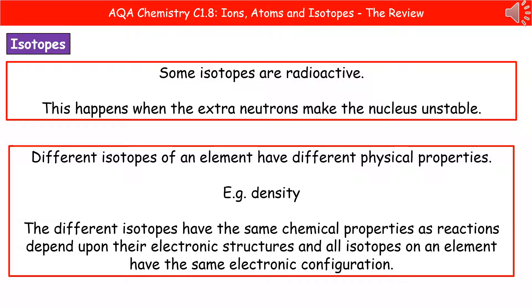When we're considering those different isotopes, then they also have different physical properties, like their density. But they have the same chemical properties, because any chemical reaction is dependent upon the electronic structure. And as we've already said, all of the isotopes of any given element have the same number of electrons, and therefore they have the same electronic configuration.